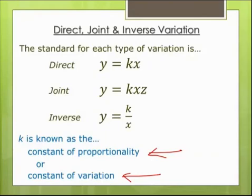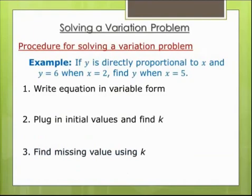Most of the time in class I'm just going to use the word constant — I really mean constant of proportionality or constant of variation. So how do you do any of these variation problems? I'm going to use a direct variation example, but it really applies to all three kinds of variation. The only thing that changes is step one; step two and step three are always the same.